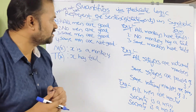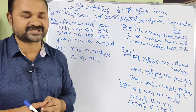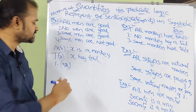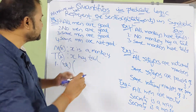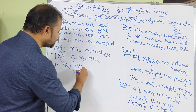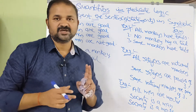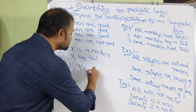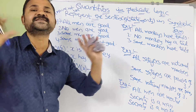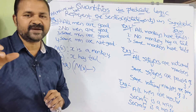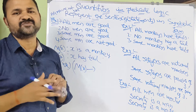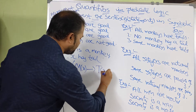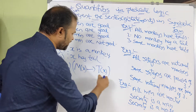First sentence: 'All monkeys have tails.' All means universal quantifier, so we write: for all x — monkeys means M(x), and since we use the universal quantifier, we use the implication symbol, because all 10 monkeys have tails. Have tails means T(x). So: ∀x(M(x) → T(x)).